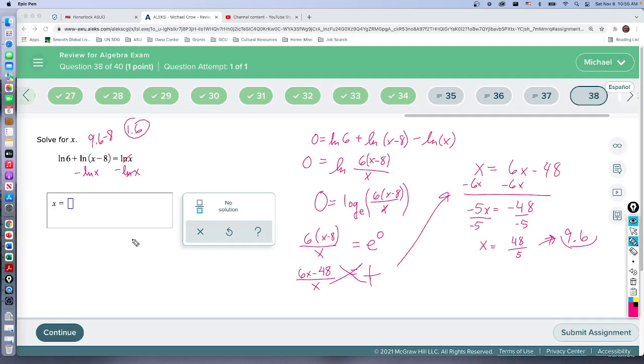But they don't ask for decimals, and they give us this fraction thing. So I think Alex is only going to be happy if we give it a fraction: 48 over 5. It doesn't reduce down because they don't have any common factors.